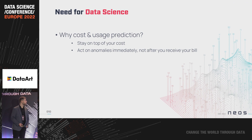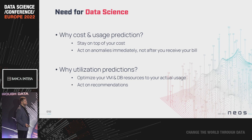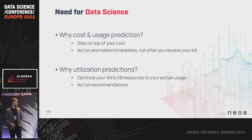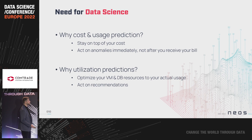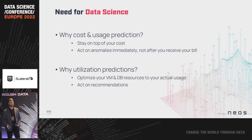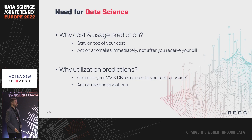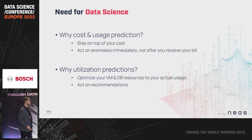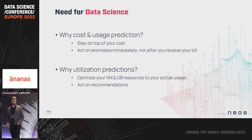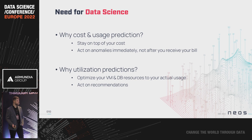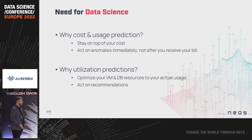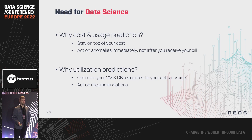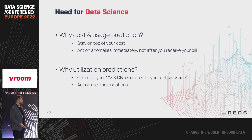To recap: we need cost and usage predictions because the more you use some resources, the more you'll pay. If you can predict how much you'll spend, you can stay on top of your costs and act on anomalies immediately rather than after receiving the bill. For utilization, predictions allow you to use the optimal resource type and shape — for example, if a resource is used extensively at the end of the month but only moderately otherwise, automatically scaling it up or down based on usage patterns can save money in the long run.